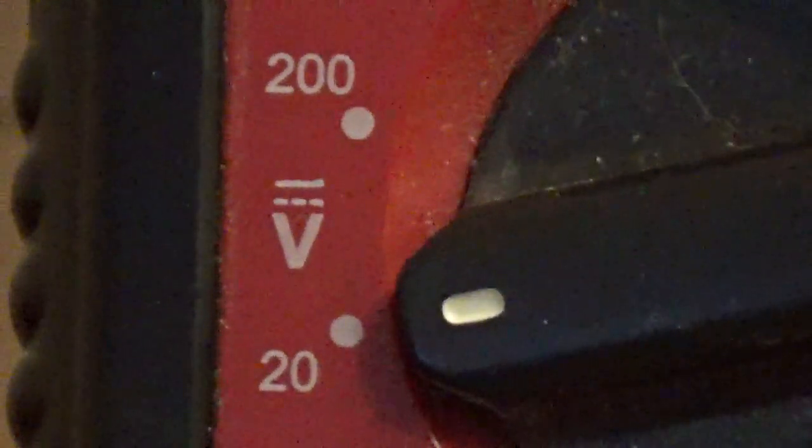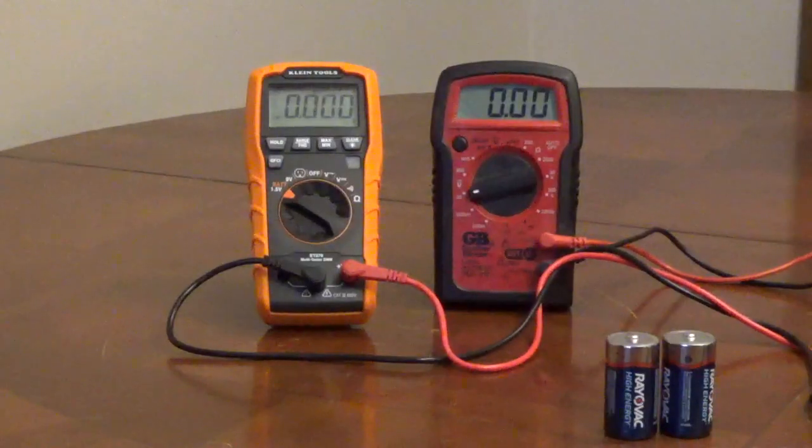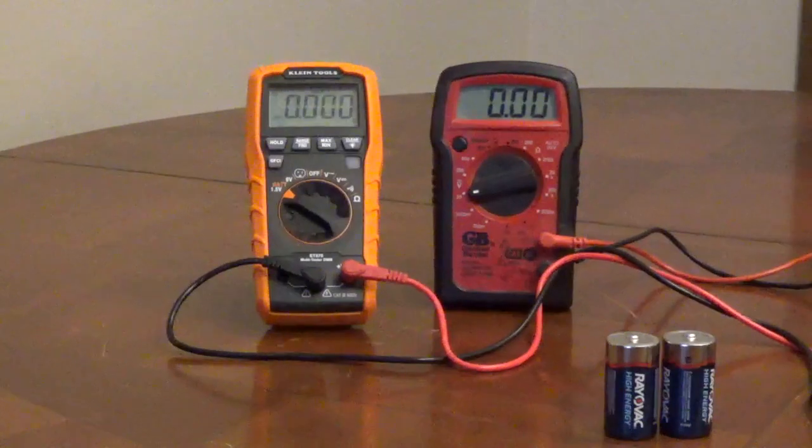The symbol for DC will have three dots or three dashes with a solid line over it. Double A, triple A, C, and D batteries are 1.5 volts DC. 9 volt batteries are 9 volts DC.